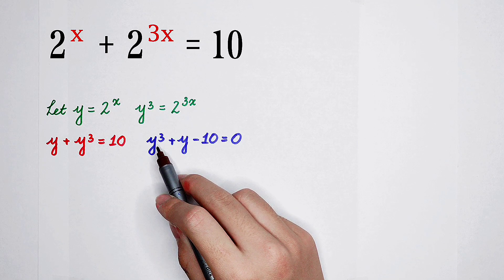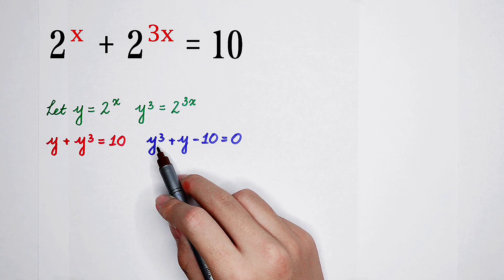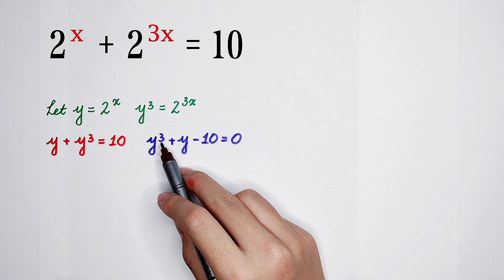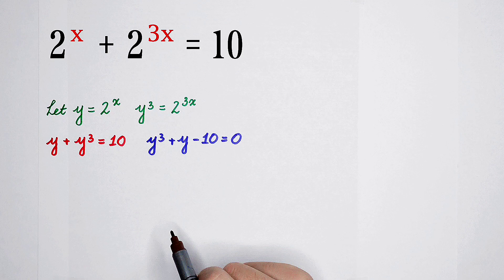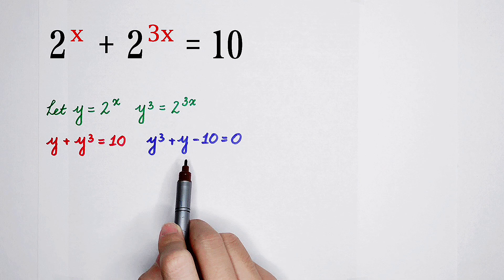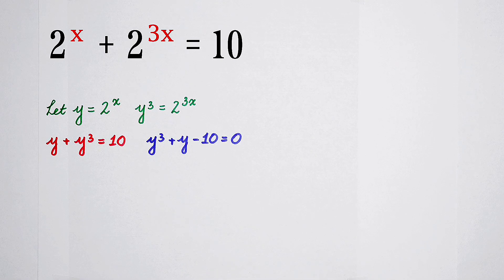The largest exponent is 3. It is not so good. We should factor it, factoring the left-hand side. How should we factor it?